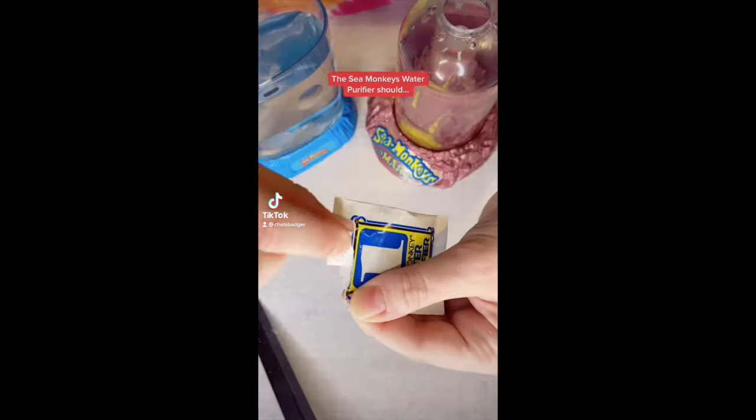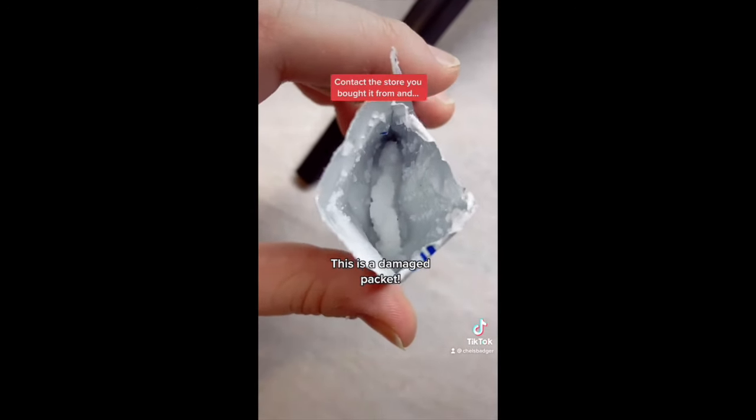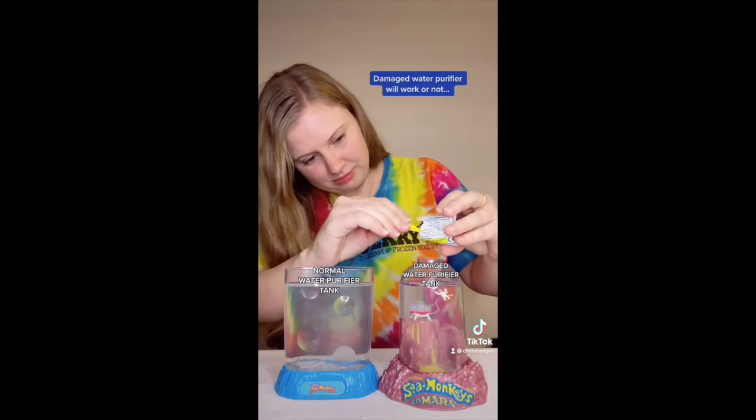The sea monkeys water purifier should look like a dry white powder. However, if you open it and it's wet and cloggy like this, contact the store you brought it from and let them know politely that it's damaged. I am currently doing an experiment to see if damaged water purifier will work or not. So follow along if you want to see the results.